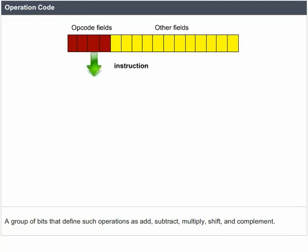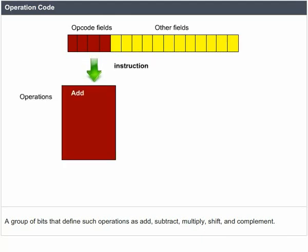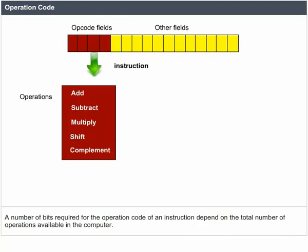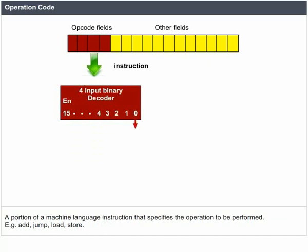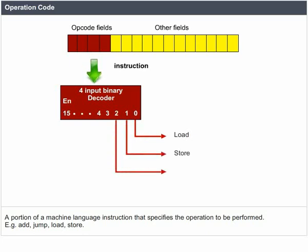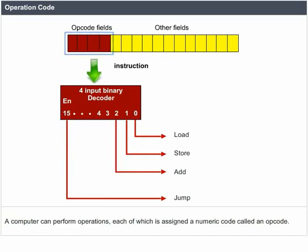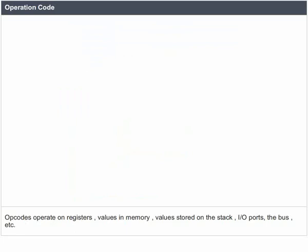A group of bits defines operations such as ADD, SUBTRACT, MULTIPLY, SHIFT, and COMPLEMENT. The number of bits required for the operation code depends on the total number of operations available in the computer. A portion of a machine language instruction that specifies the operation to be performed is called the opcode. Examples include Load, Store, Add, and Jump.